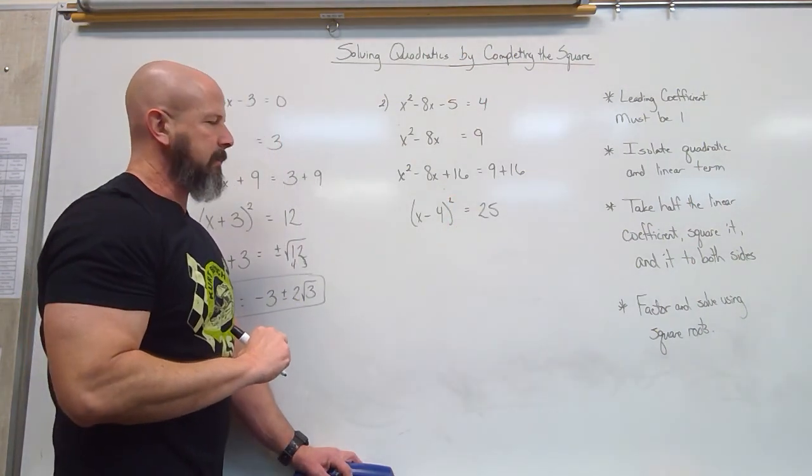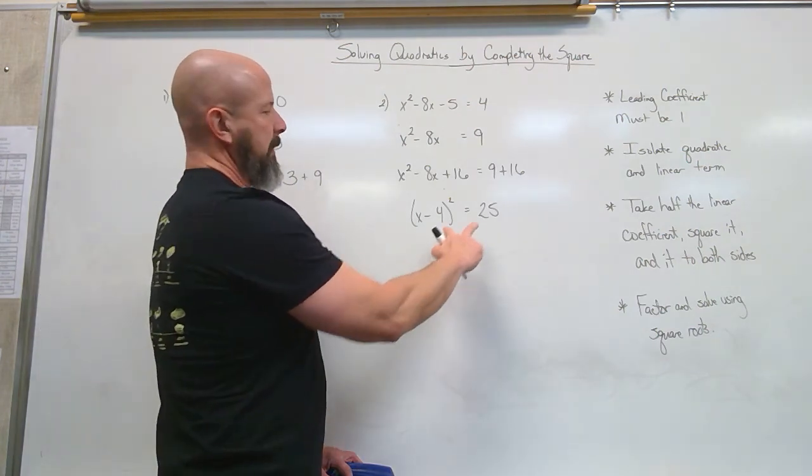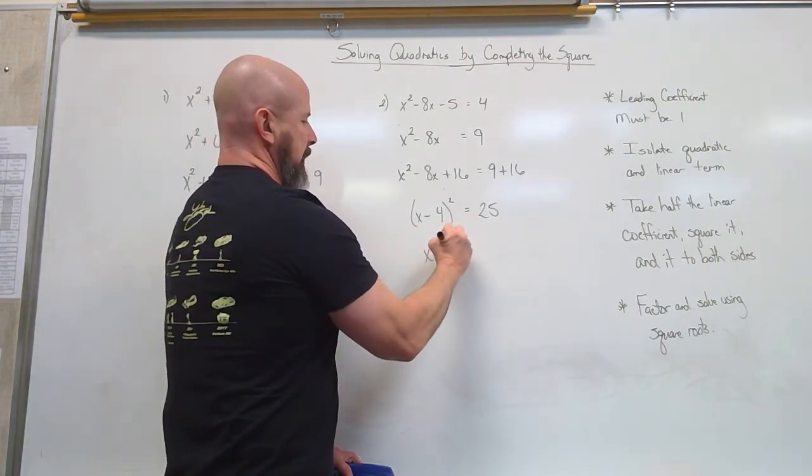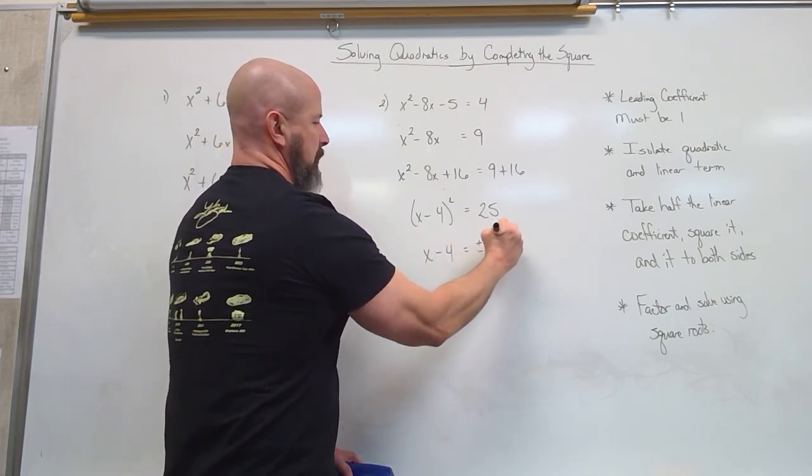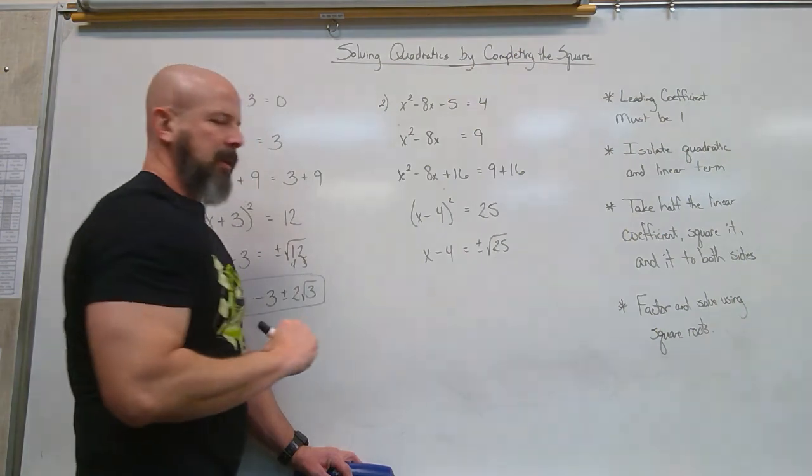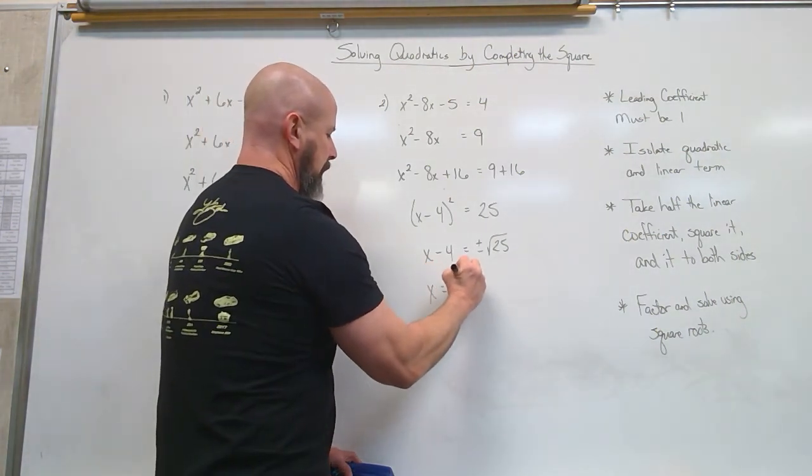Okay, there. Now my square root method comes in. x minus 4 equals plus or minus root 25. So now to get x alone, I can move that 4 over.